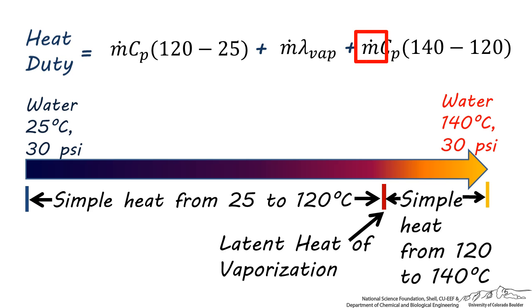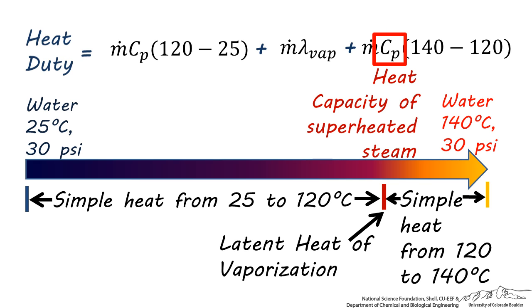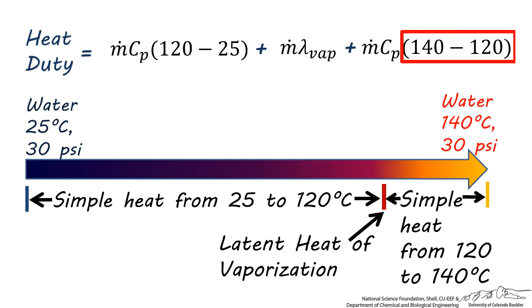The last simple heat term has an M dot, which is 1 gallon per minute, times the heat capacity of superheated steam, which I averaged between 120 and 140 degrees as around 2.1 kilojoules per kilogram degree Kelvin, times 140 minus 120 degrees centigrade, which is the final simple heat temperature increase.